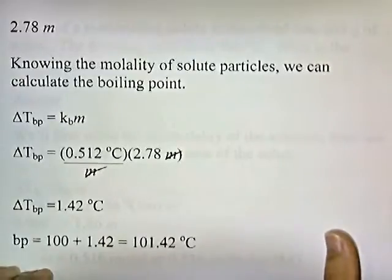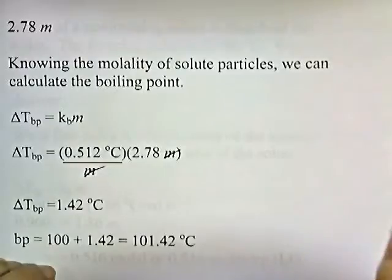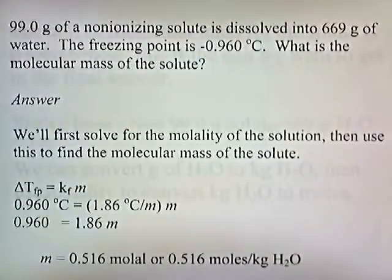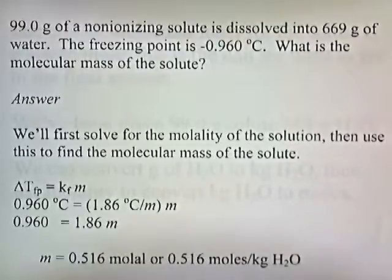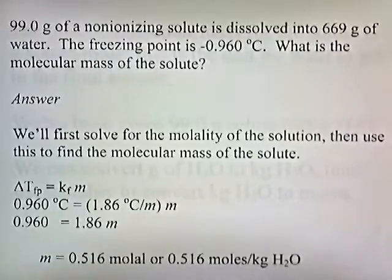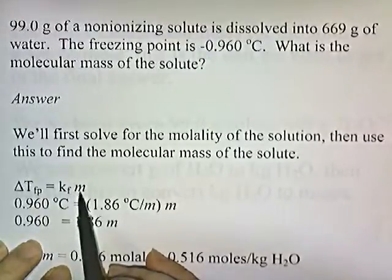Let's do one more type of problem — one where you have to find the molar mass of the solute. 99 grams of a non-ionizing solute is dissolved in 669 grams of water. The freezing point is negative 0.96 degrees Celsius. What is the molecular mass of the solute? First we're going to find the molality of the solution, and then we'll use that to find the molecular mass.